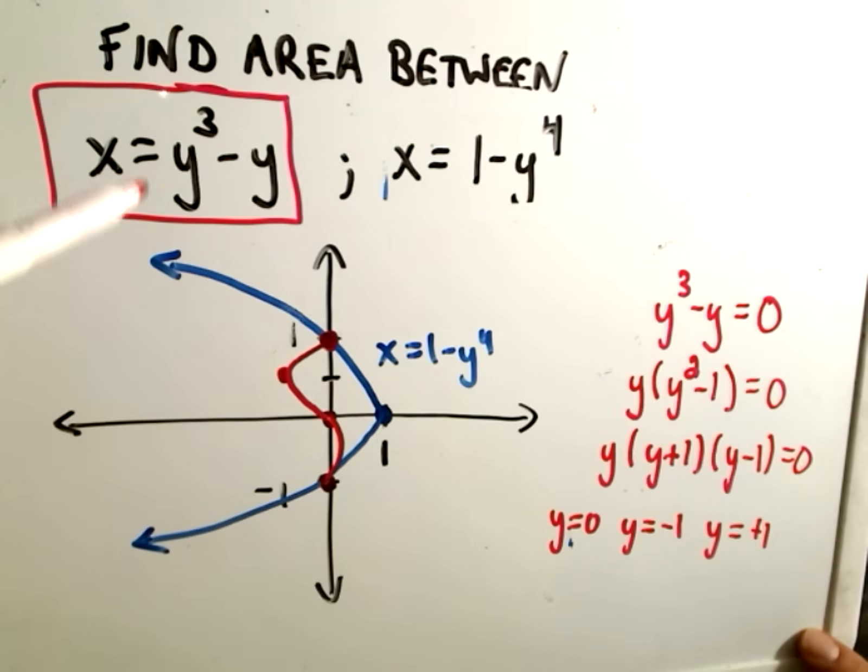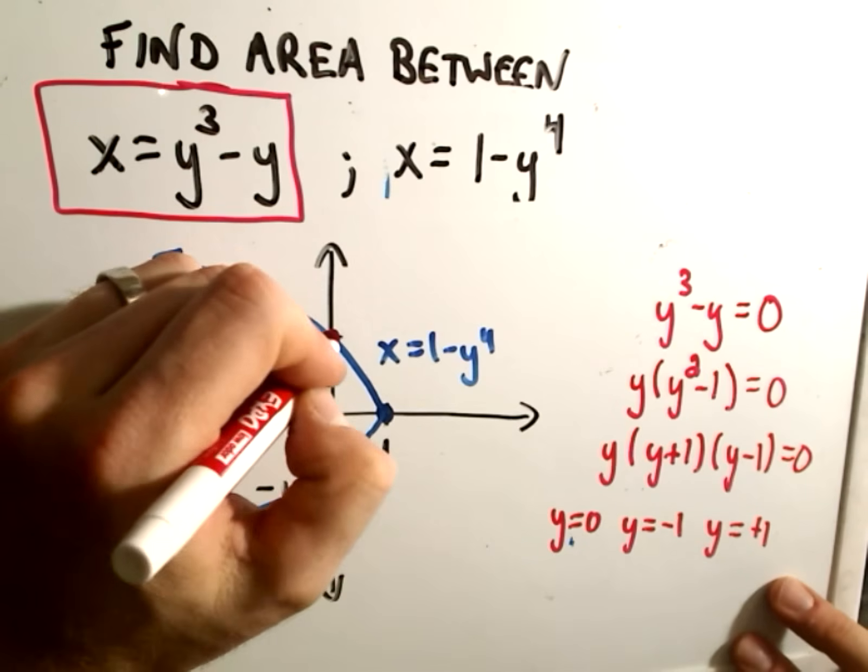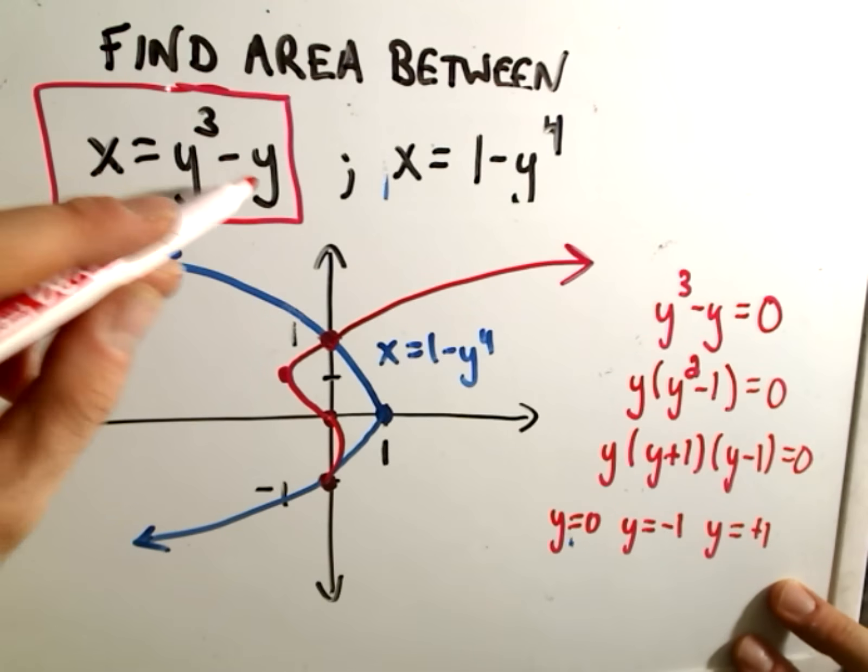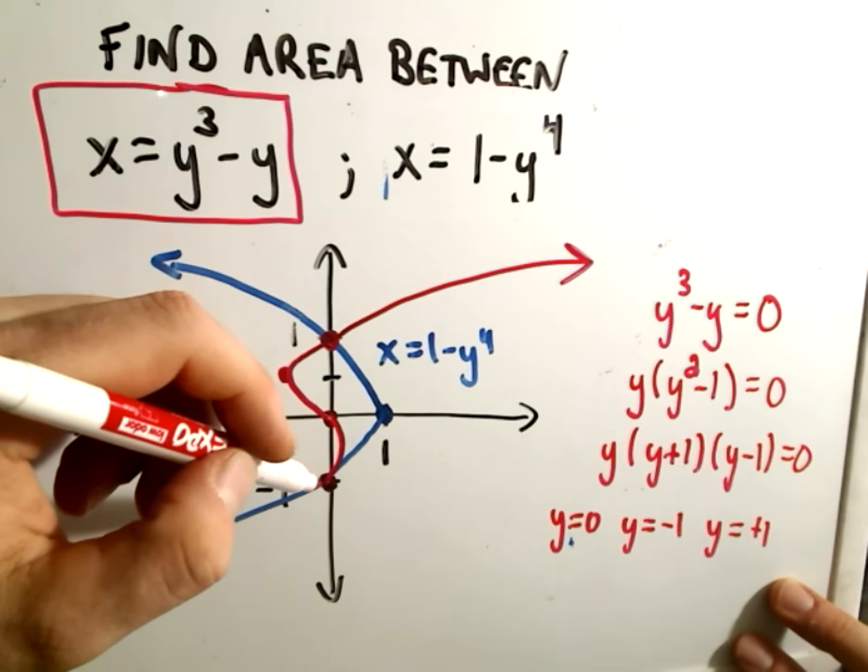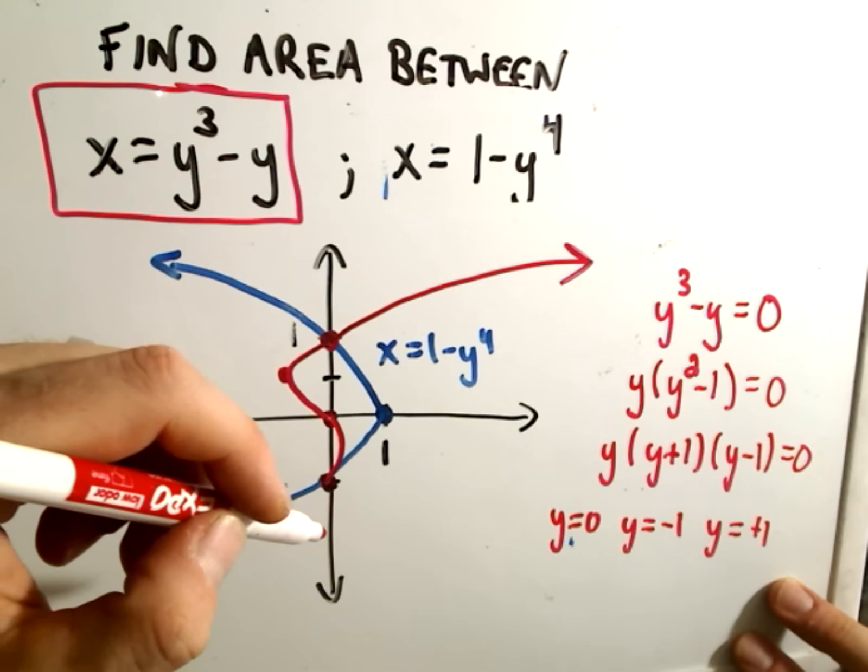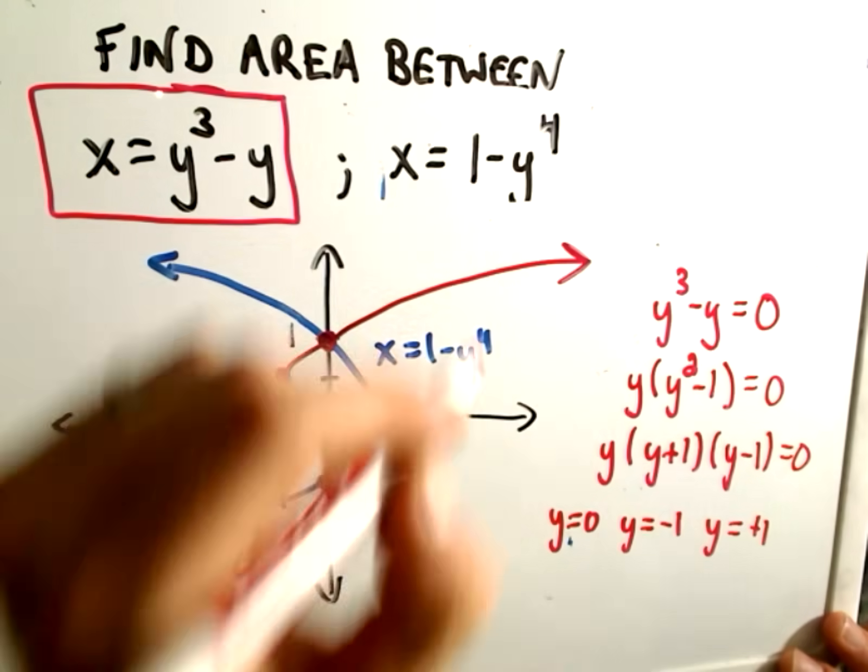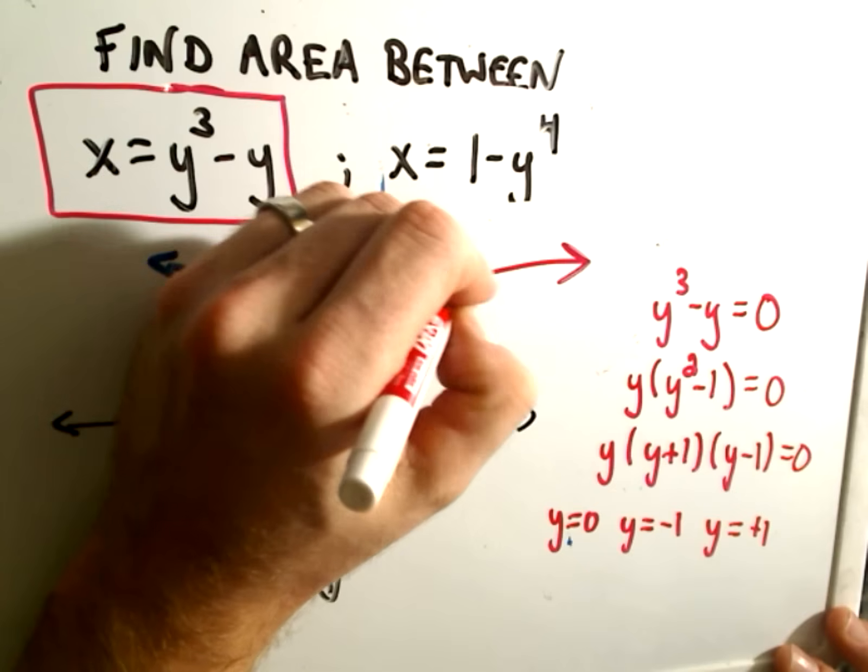And lastly, as y goes to positive infinity, as y gets bigger, notice the x-coordinate simply gets bigger as well. And then as y becomes more negative, you'll have a negative number cubed plus some positive number. But the negative number eventually will start dominating. So the blue one is x equals 1 minus y to the fourth. The red one is x equals y cubed minus y.